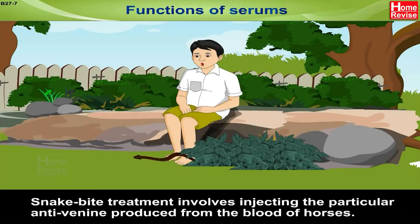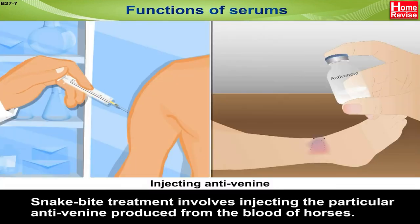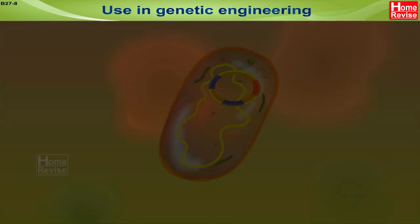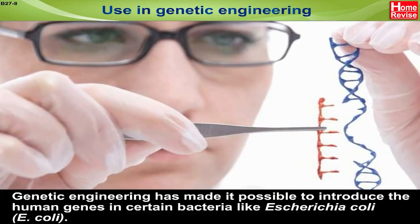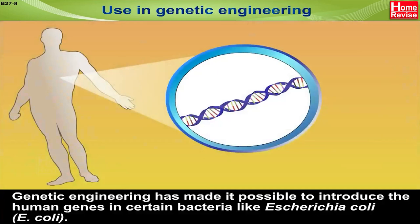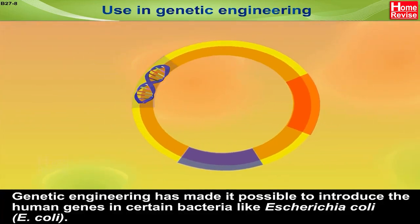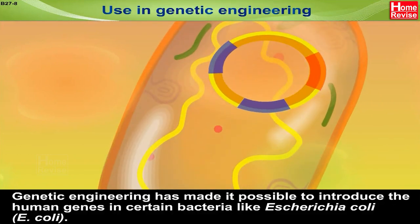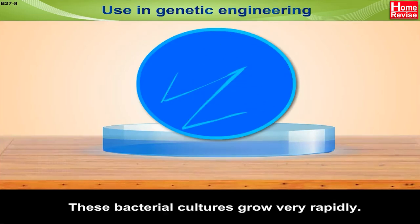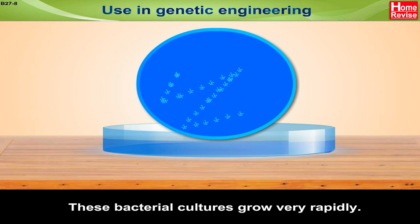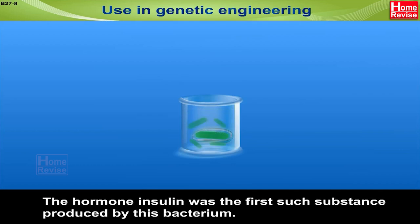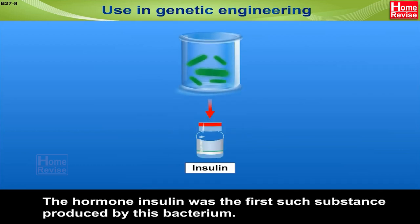Snake bite treatment involves injecting the particular antivenin produced from the blood of horses used in genetic engineering. Genetic engineering has made it possible to introduce human genes into certain bacteria like Escherichia coli or E. coli. These bacterial cultures grow very rapidly, and the particular gene-dependent products are extracted from these bacteria. The hormone insulin was the first such substance produced by this bacterium.